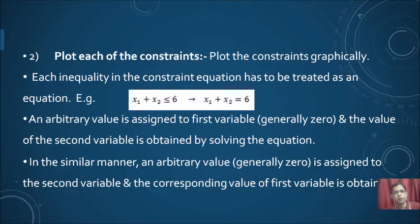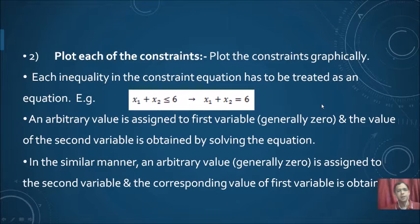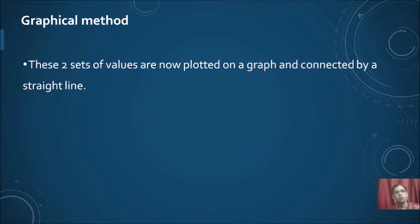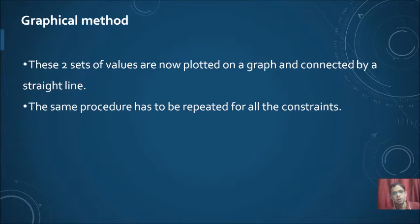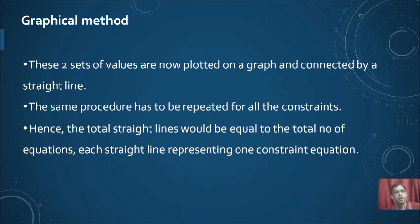We join those two points to draw the line segment. Remember that the constraint was x1 + x2 ≤ 6, not x1 + x2 = 6 — we will address that after drawing the line. The same procedure is repeated for all constraints. If there are three constraints, three line segments will be drawn; if two, then two. The total number of straight lines equals the total number of constraint equations.